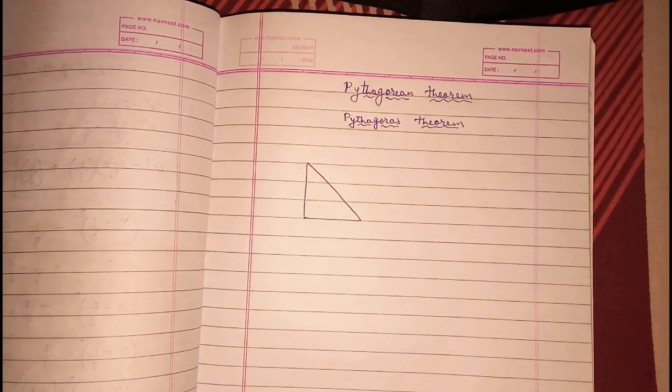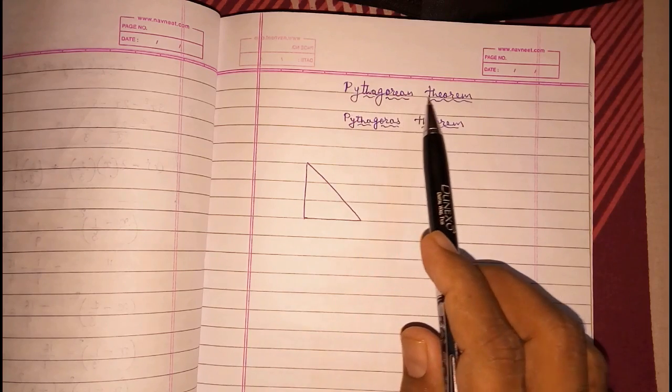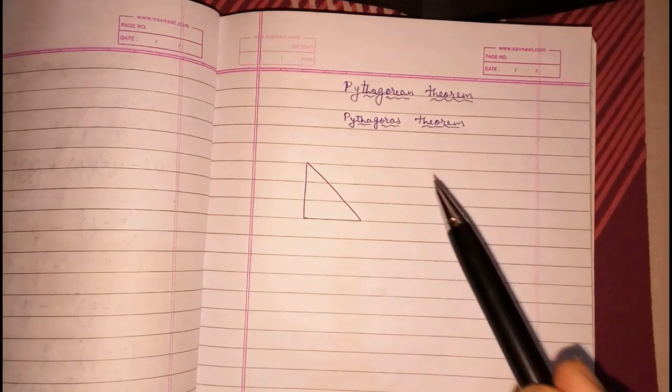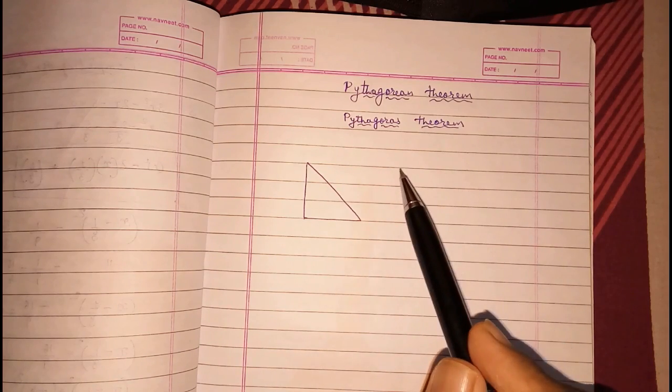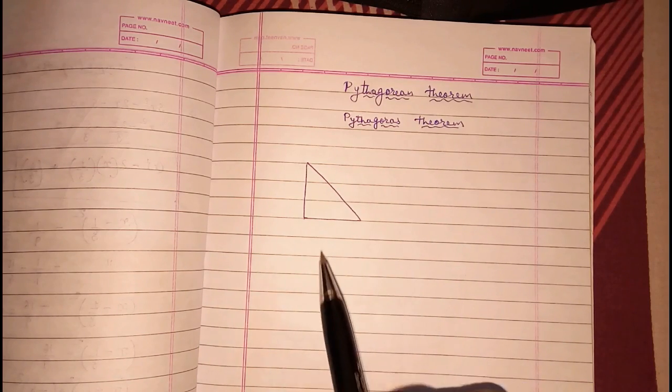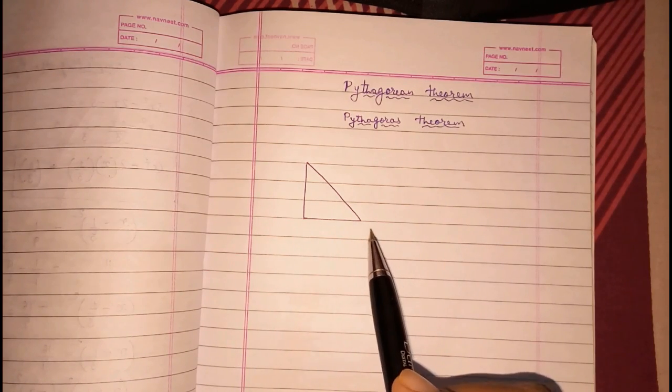Hello friends, today we are going to study about Pythagoras theorem, also known as Pythagorean theorem. Actually, it is a trick which is used to find the third side when two sides are given in a right angle triangle.